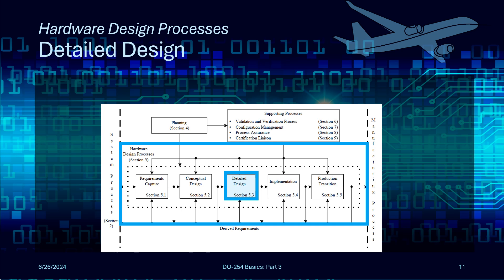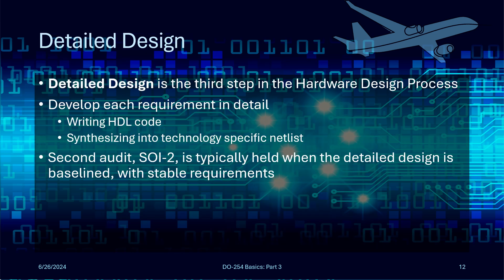After the design concept is developed, evaluated, and verified, the next step is creating the detailed design. In the detailed design phase, each requirement is developed in detail. For a typical FPGA design, this entails writing HDL code and synthesizing it into a technology-specific netlist. Once the detailed design has been baselined — meaning requirements are stable and developed into a workable version — you snapshot it and keep it under version control. That's your baseline, and once that has happened, you typically have your second formal audit, SOI-2.